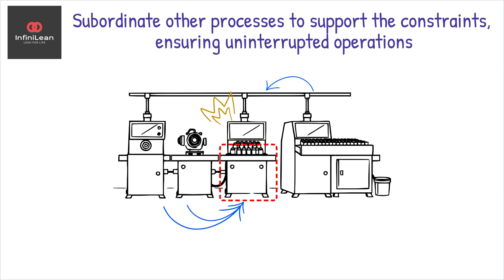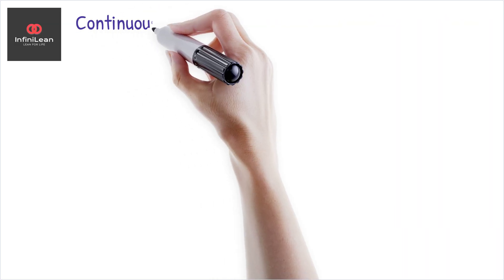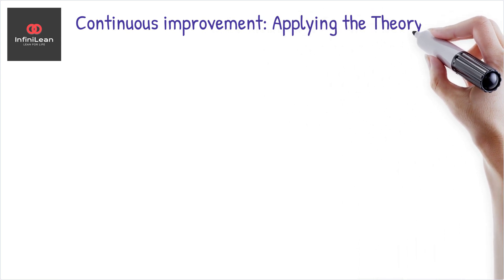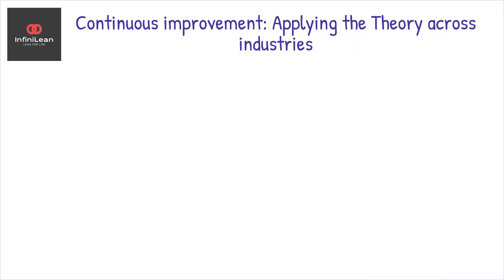After exploiting and subordinating, the next step is elevating the constraint. This might involve acquiring new technology, hiring additional staff, or redesigning processes to remove bottlenecks. Once the constraint is no longer a limiting factor, the process begins again with a commitment to continuous improvement.